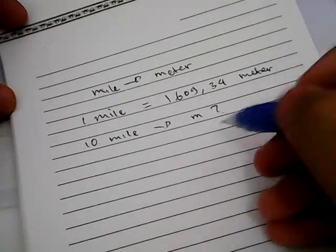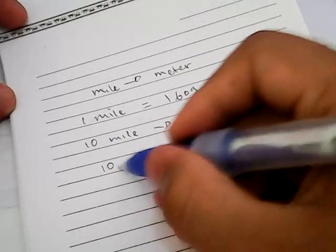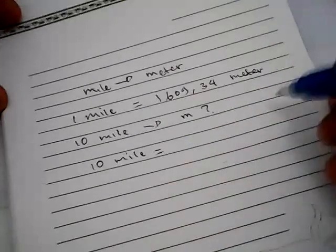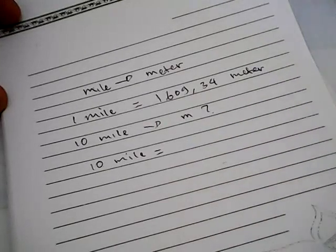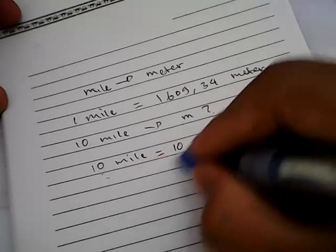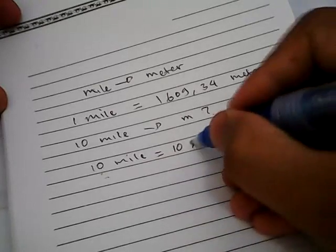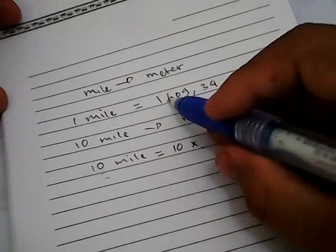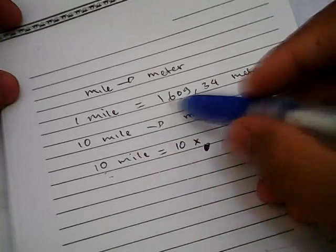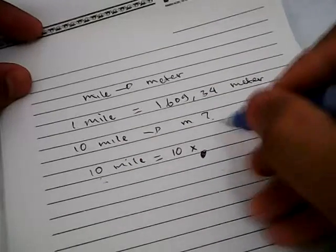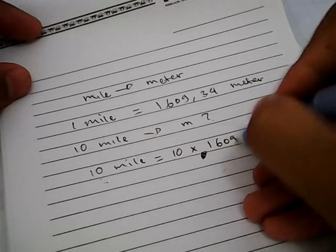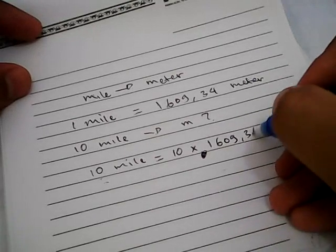The first thing you need to do is write 10 miles again, and then give it an equal sign. Then you put that 10 again, and then you need to multiply it with this number, this conversion number: 1,609.34 meter.